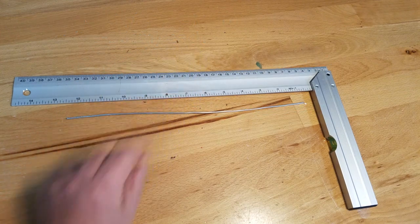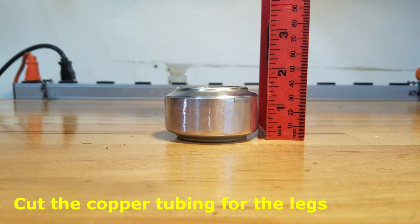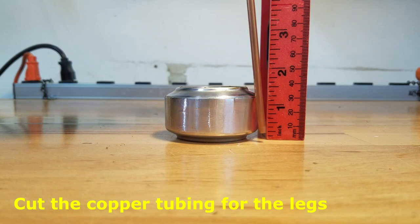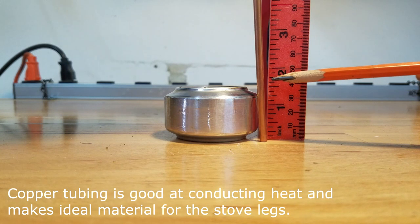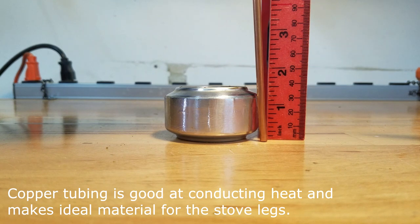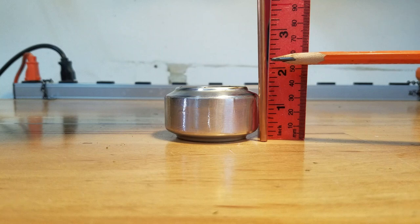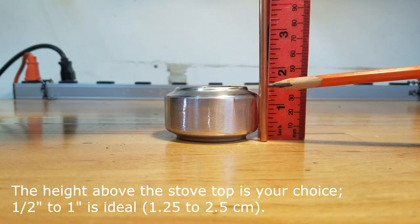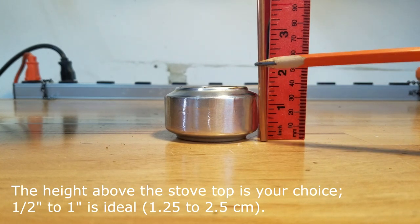The first step is to cut approximately a 10 to 12 inch section of the multi-purpose utility wire, roughly 25 to 30 centimeters. Now let's measure the length of the stove legs. As you can see, this stove is approximately one and a half inches high or four centimeters. I'll go up about a half to three quarters of an inch above that and make a mark.